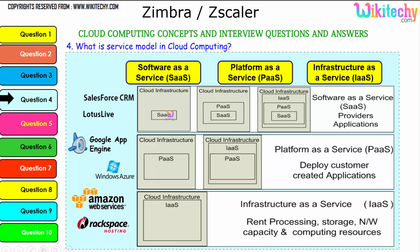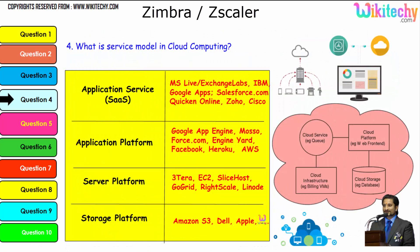With Software as a Service, only changes in application settings can be made. Examples of SaaS include Lotus Live and Salesforce CRM. For Platform as a Service, examples are Windows Azure and Google App Engine. For Infrastructure as a Service, examples are Amazon Web Services and Rackspace Hosting. Further breaking down the service model: application service, application platform, server platform, and storage platform — with storage provided by Amazon S3, Dell, and Apple.